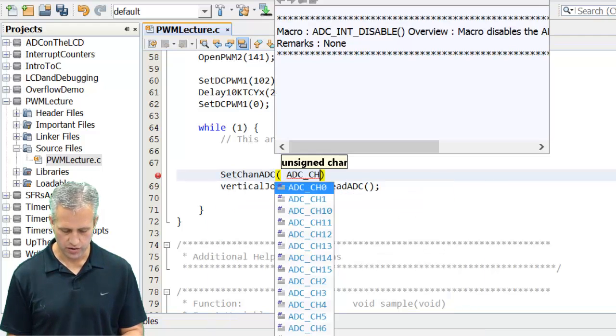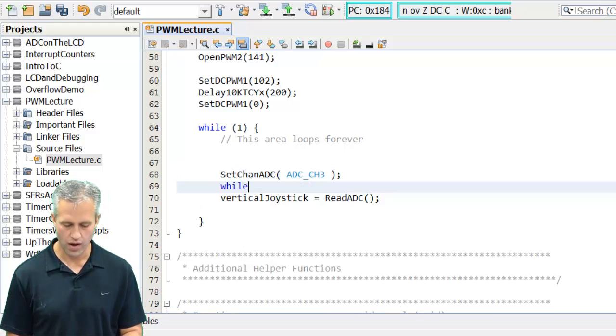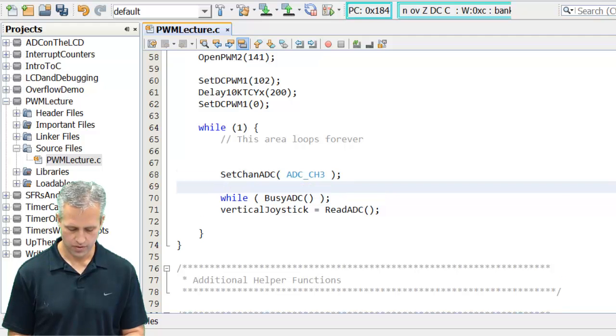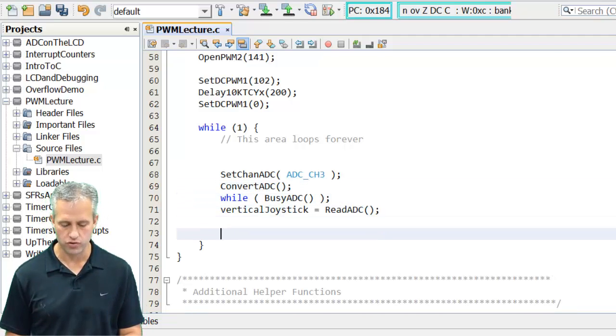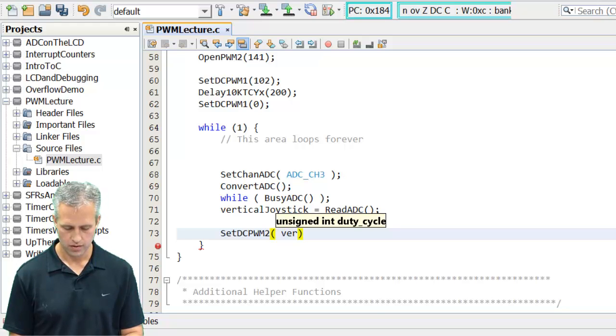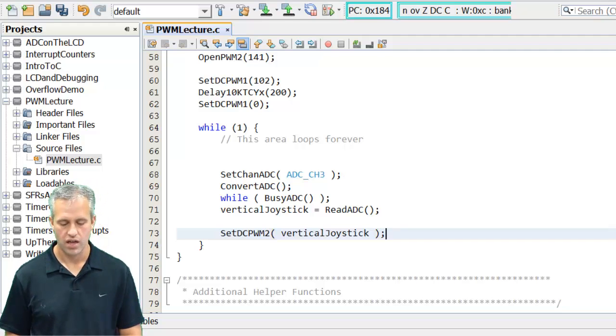So I want ADC channel 013, I think is the right one for the joystick. And then I'm going to say while busy ADC. So while it's busy, do nothing. Oops, I forgot to say convert. It's much easier to copy paste these from somewhere else than to remember what they are. But those should give me the vertical joystick reading. And then what I'm going to do is I'm going to use that to set the duty cycle of PWM2.